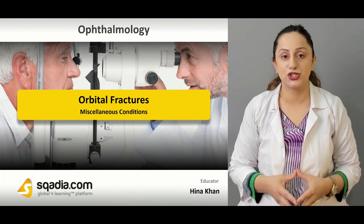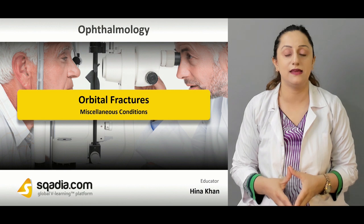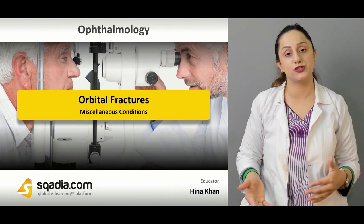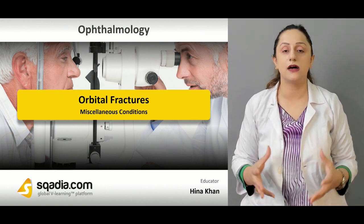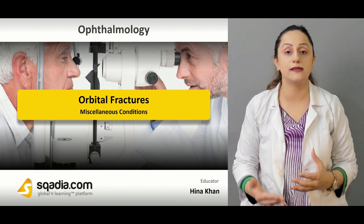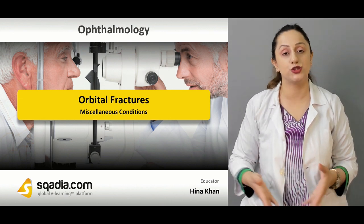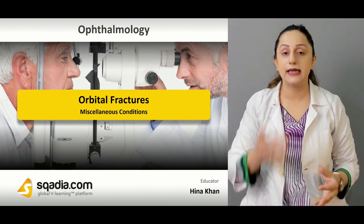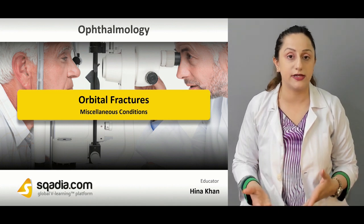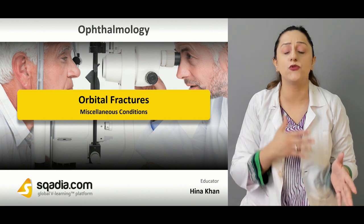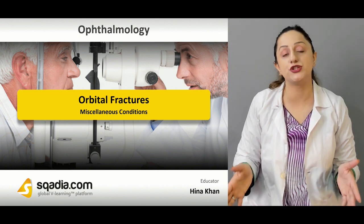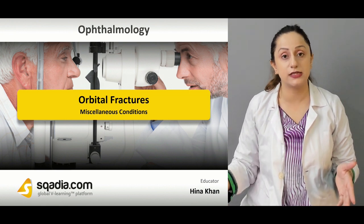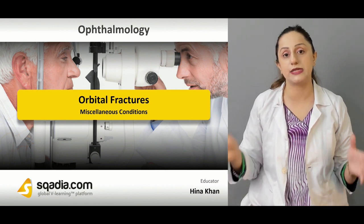Orbital trauma is a very common condition that is usually seen in the ER or emergency departments. One should know how to deal with such patients, and the assessment basically starts from history taking. The history would involve the type of weapon used, and the time since injury is again very important because it is going to determine what kind of surgical procedure has to be performed, affecting the prognosis and final outcomes.